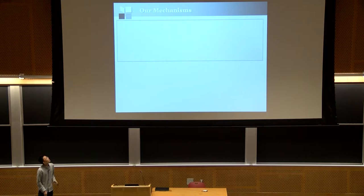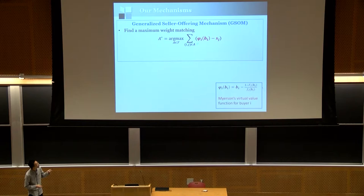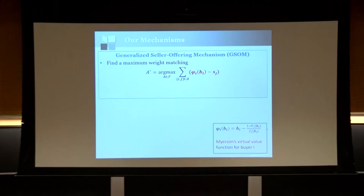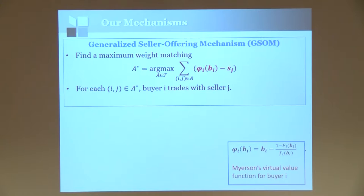Here is our mechanism for double auctions. We first build a bipartite graph between buyers and sellers and assign each edge weight as the buyer's virtual value minus the seller's true value, where φ is the Myerson virtual value function for buyer i. For regular distributions this applies directly; for non-regular distributions we replace it with the ironed Myerson virtual value. We then choose a maximum weight matching on this bipartite graph under the feasibility constraint, breaking ties arbitrarily. For each pair (i, j) in the matching, buyer i trades with seller j.